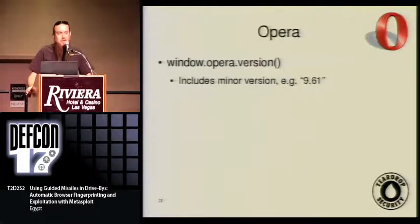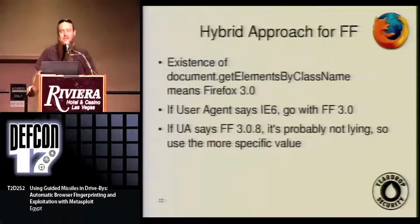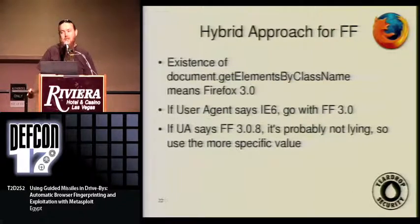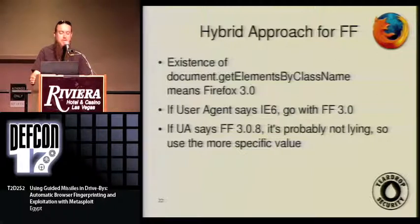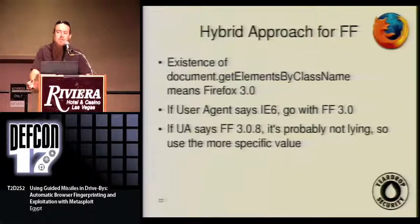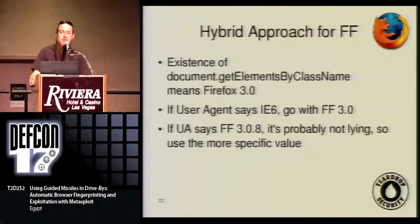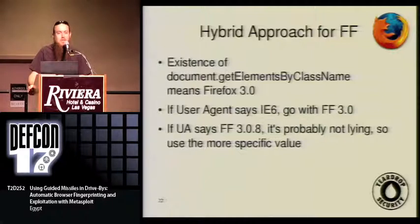Luckily, Internet Explorer gives us awesome functions called ScriptEngineMajorVersion, ScriptEngineMinorVersion, and ScriptEngineBuildVersion. The great thing about these three functions is they're almost unique across all combinations of OS and client. If we have the output of these three functions, we can reliably and accurately determine not only the browser and browser version, but the operating system, the flavor of OS — XP or 2000 or whatever — as well as the service pack level. Opera gives us a function called opera.version. Firefox uses object detection; for example, document.getElementsByClassName exists only in Firefox 3.0 and newer, letting us verify whether the user agent is telling the truth.